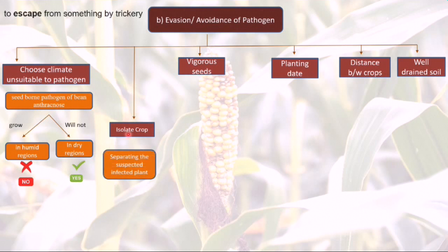Second is isolating the crop. Any plant that is already infected by a pathogen must be separated from healthy plants. Suspected plants — those likely to become infected — should also be removed, as these can further spread the disease. Isolating the crop is very important.